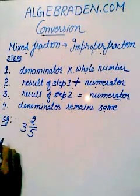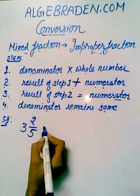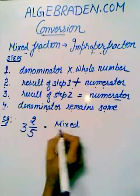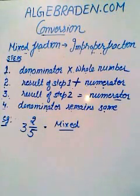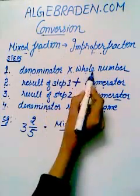We have an example: 3 into 2 over 5. This is a mixed fraction, so we convert it into improper fraction. Step 1: Denominator multiply with whole number.